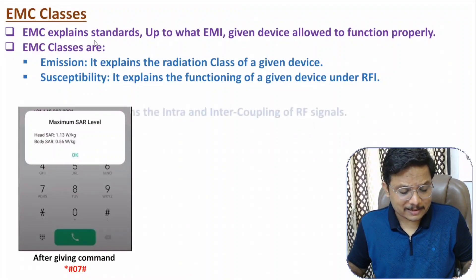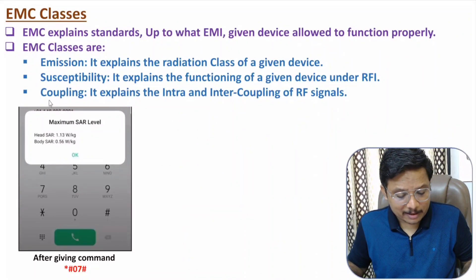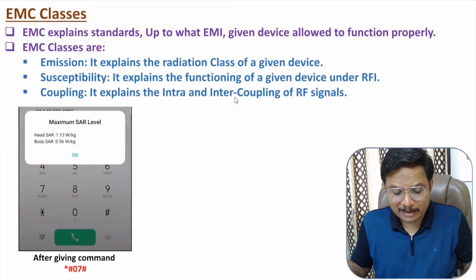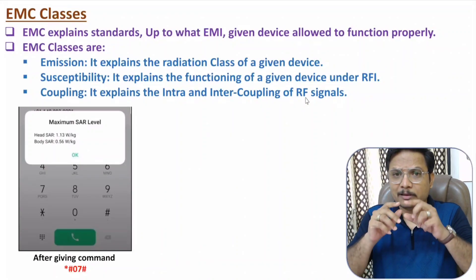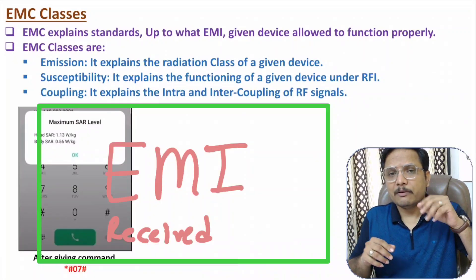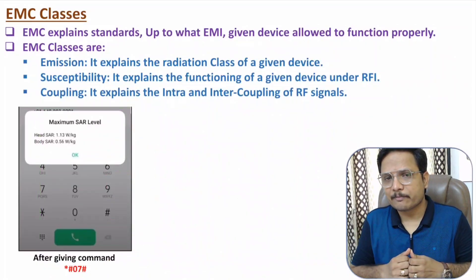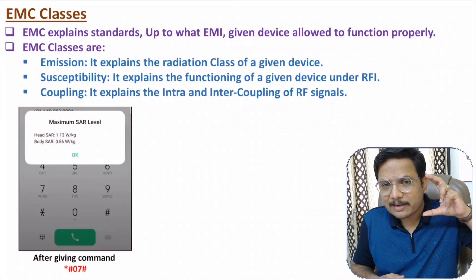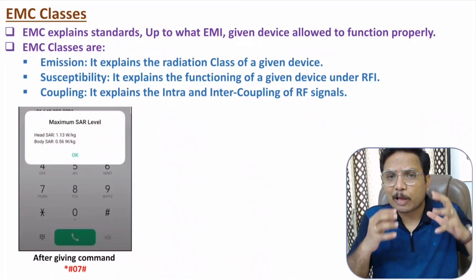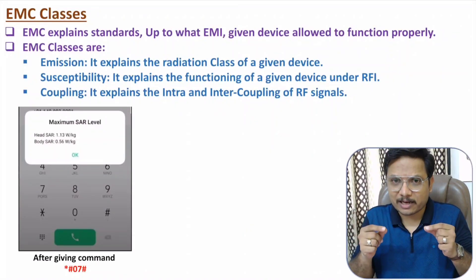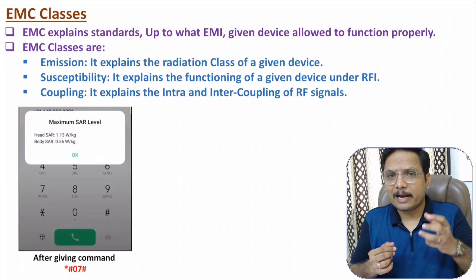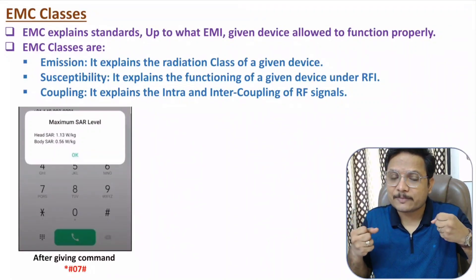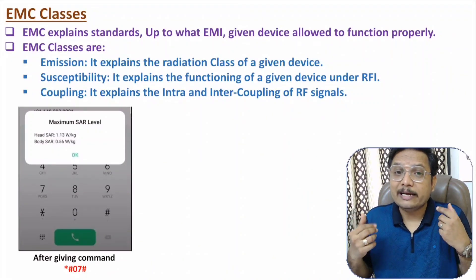The third class of EMC is coupling. It explains intra and inter coupling of RF signals. Intra coupling means within a given device, we may have many blocks inside — those RF blocks are coupling with each other, and that comes under intra coupling. And when one device couples with a second device, that comes under the class of inter coupling.